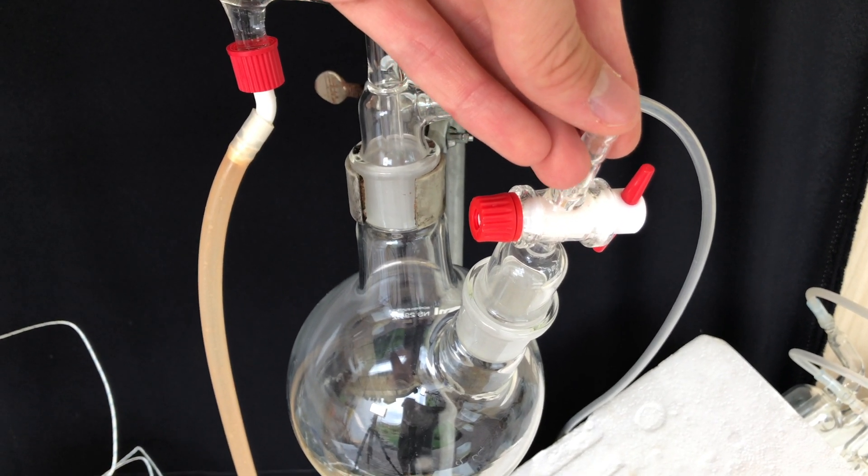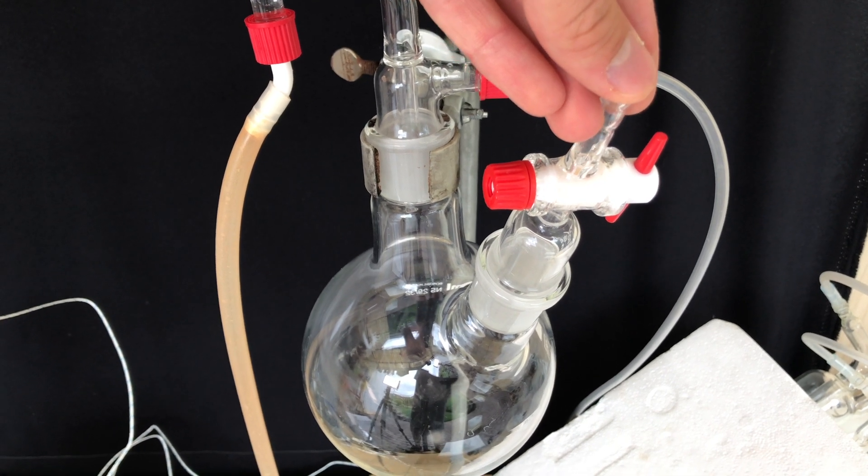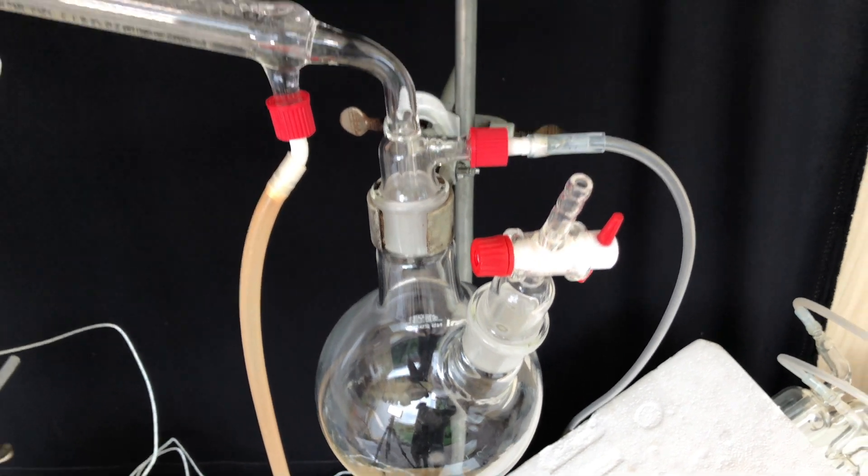There are going to be extreme bumping issues with the vacuum distillation in the beginning. You want a quick way to vent the system and therefore we use this two-neck round-bottom flask with this valve.